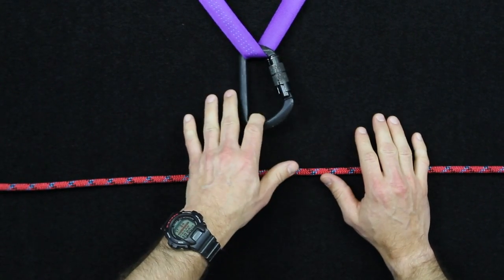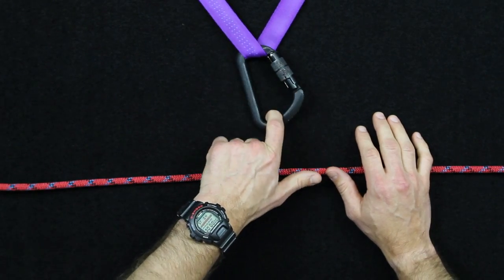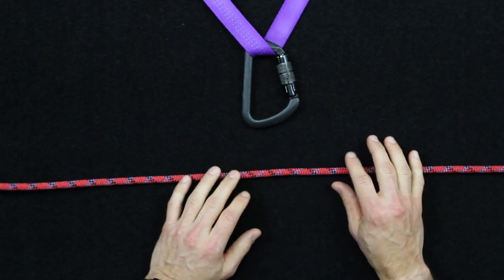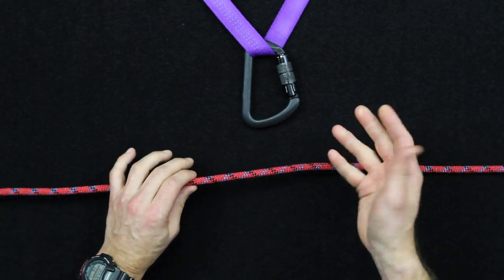Alright, so to tie the munter hitch, what I have set up here is just a lead carabiner in this piece of webbing just to simulate where you would be tying off onto on your harness when you're belaying.